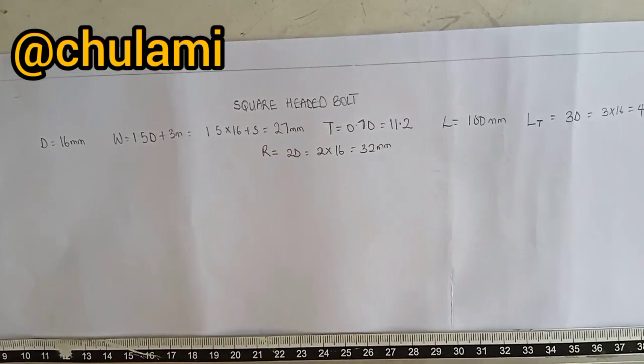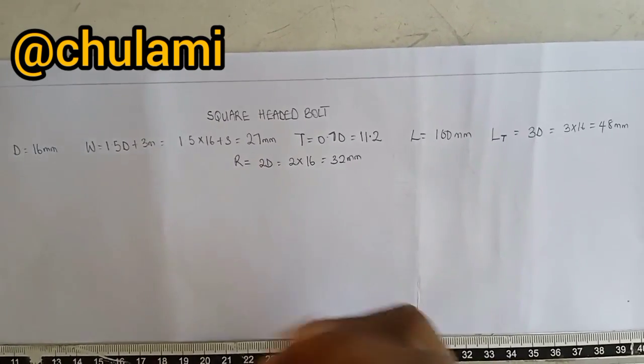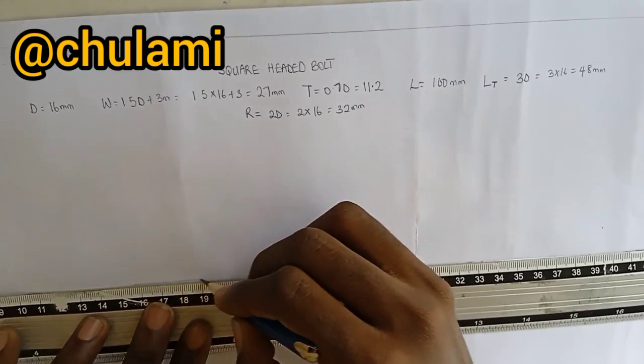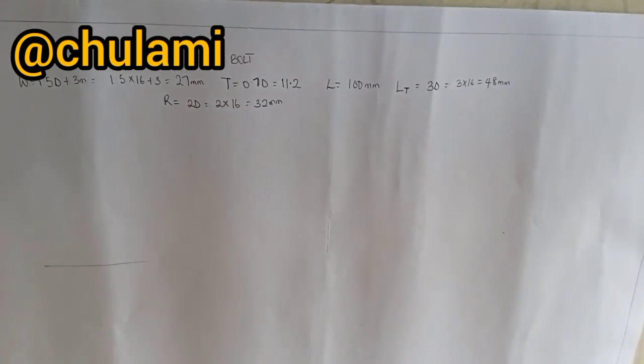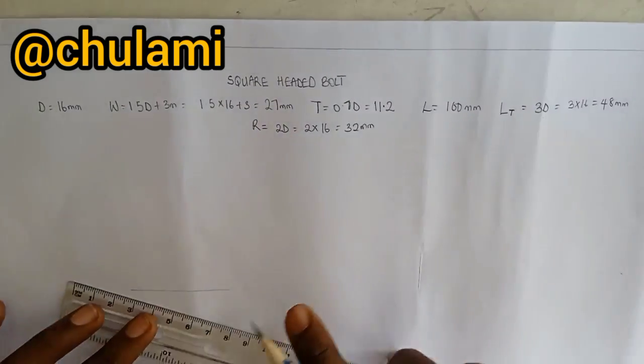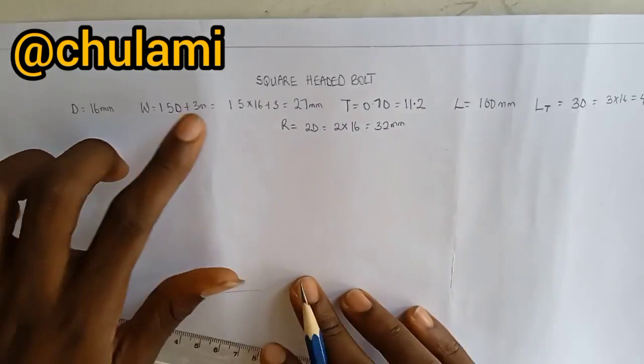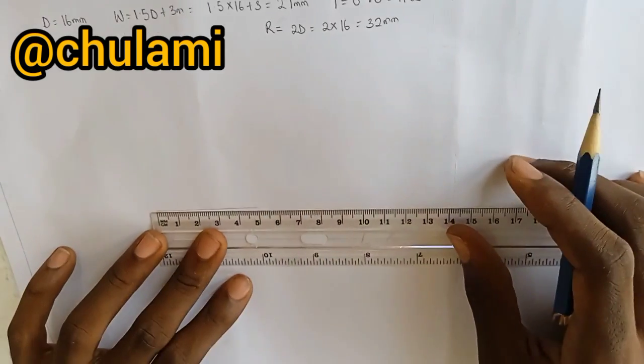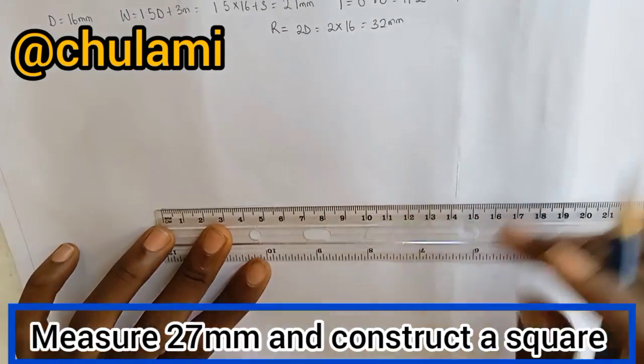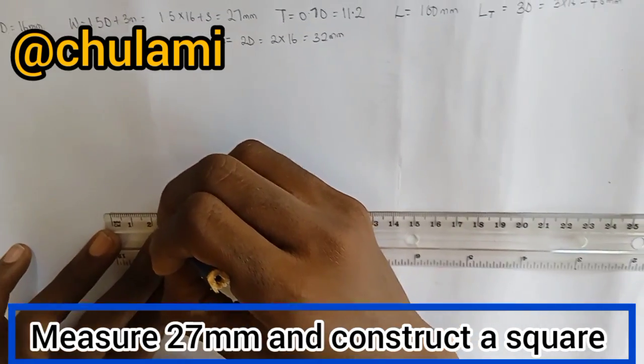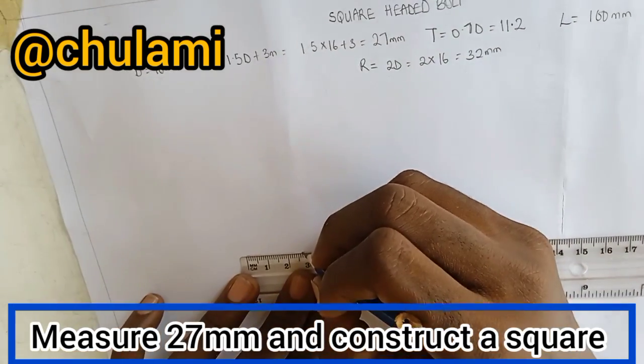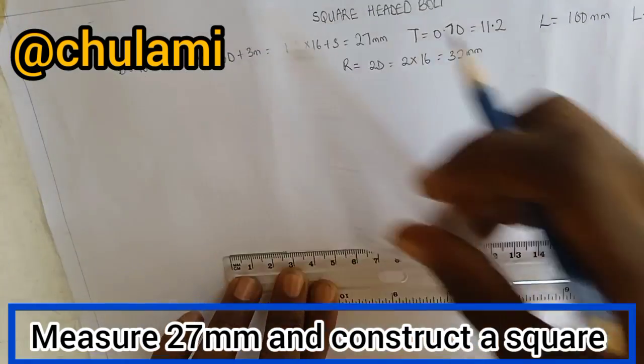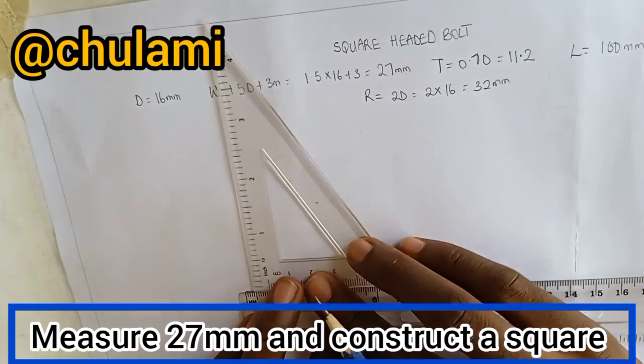The first thing we need to do, we will draw a line, a straight line. We need to construct a square, since it is a square headed bolt, so draw a straight line first. You can see the width is given as 27mm, so your straight line measures 27mm. This is 25mm, 26mm, 27mm, so it is somewhere here. So just take that part, then you construct a square. I believe we should know how to construct a square by now.